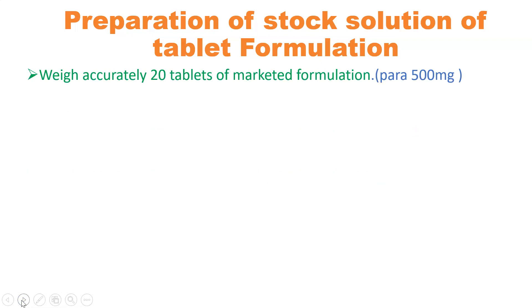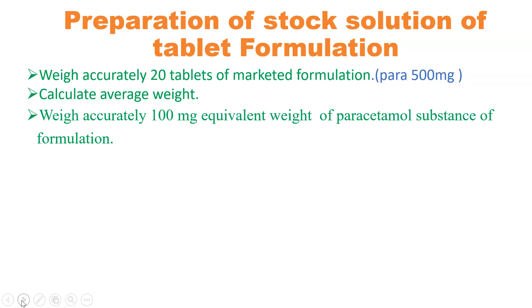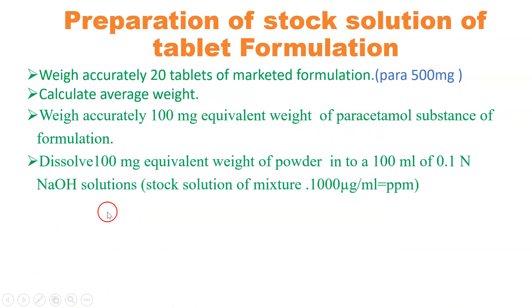Weigh accurately 20 tablets of a marketed formulation having paracetamol 500 mg as the dose. Calculate the average weight — I will show in Excel how to calculate the average weight and how to calculate the equivalent weight. We have to accurately weigh 100 mg of equivalent weight, not directly 100 mg of powder. Dissolve this 100 mg equivalent weight of powder in 100 ml of 0.1 normal HCl solution to prepare a stock solution of 1000 microgram per ml.